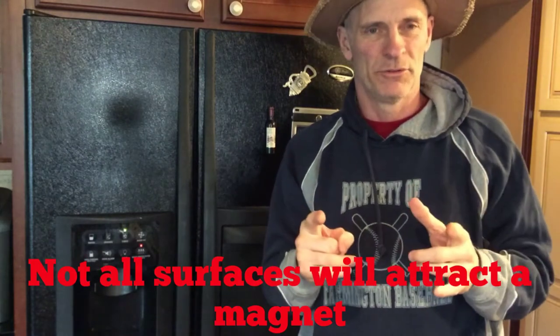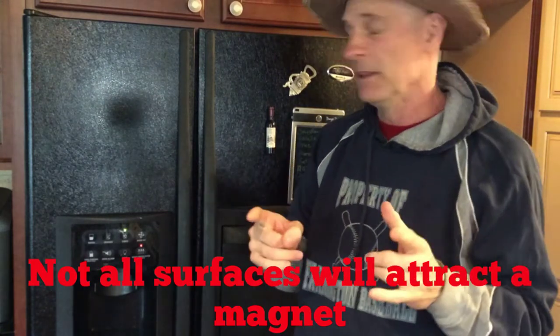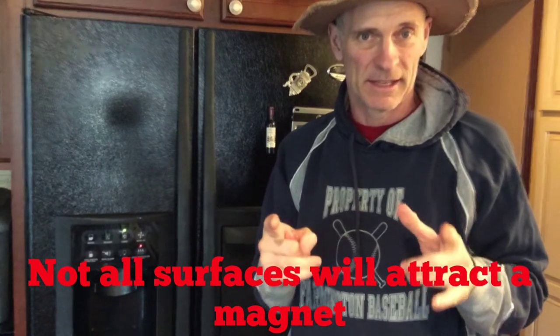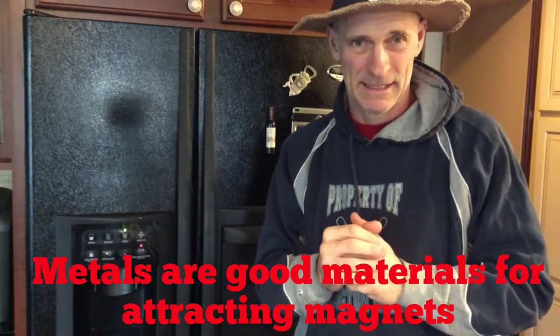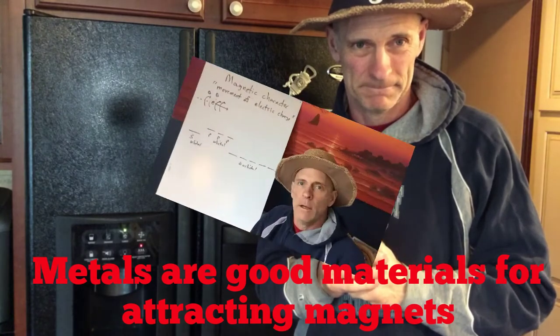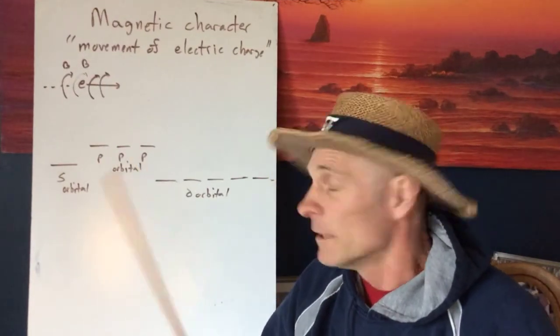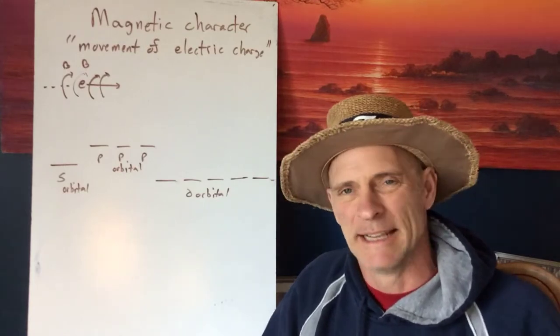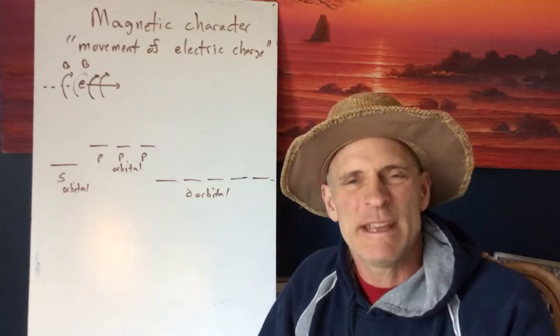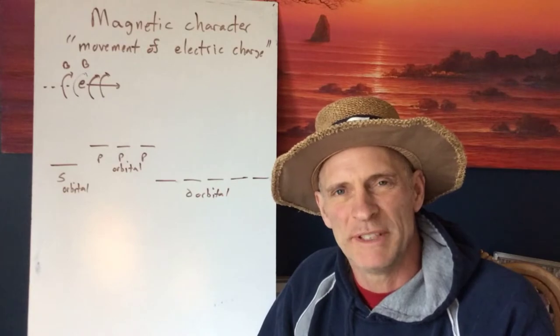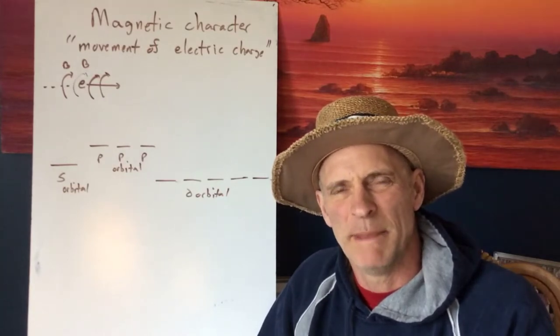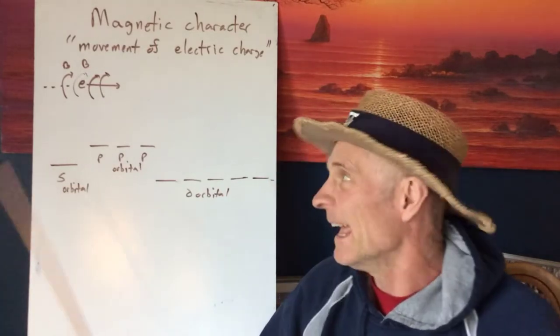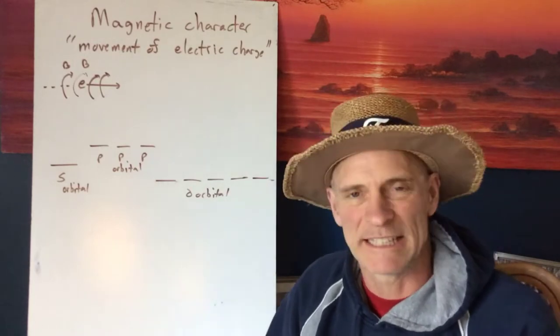It's important that we understand that metals are the ones that exhibit magnetic character. They can be temporarily magnetized in a magnetic field. Okay, guys, let's talk about really what is a magnet or something that makes magnetic character. In essence, if we get down to the very bones of it, the very basis of what makes something a magnetic character, it has to do with the movement of electric charge.